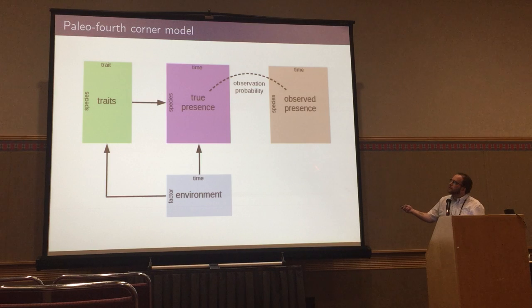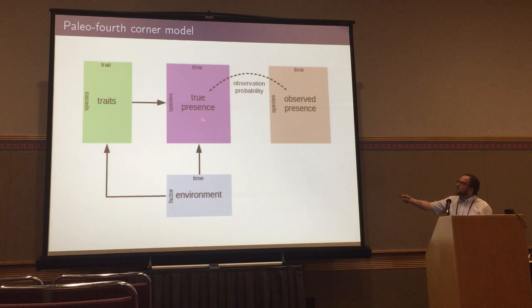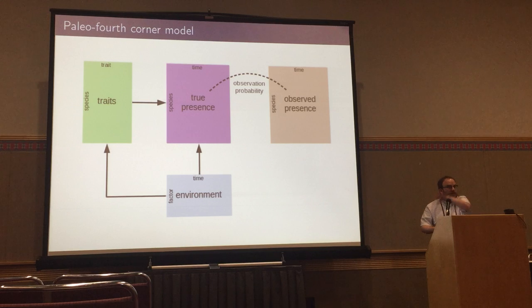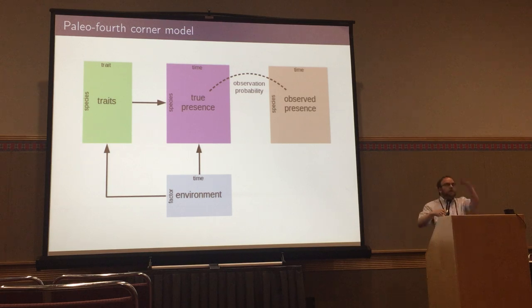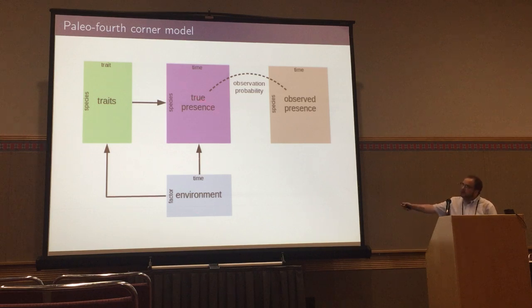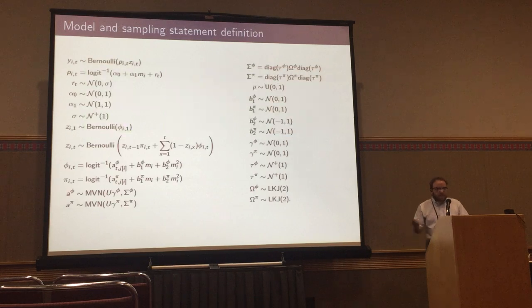The general idea is we're putting together what I call a paleo-4th formula. We're really interested in the true diversity signal, but we have the observed fossil record. So we have to figure out how to make the observed data reflect the true signal while also taking into account environmental and trait variables. The fossil record is incomplete — we see gaps where a species appears once, disappears, and only appears again later. It most likely existed in between. So we model an observation process that gives us an estimate of the probability of observing something at a given time. We estimate a true presence matrix, and species traits predict species presence through time. Environmental traits then predict both the effect of the trait and the baseline occurrence.